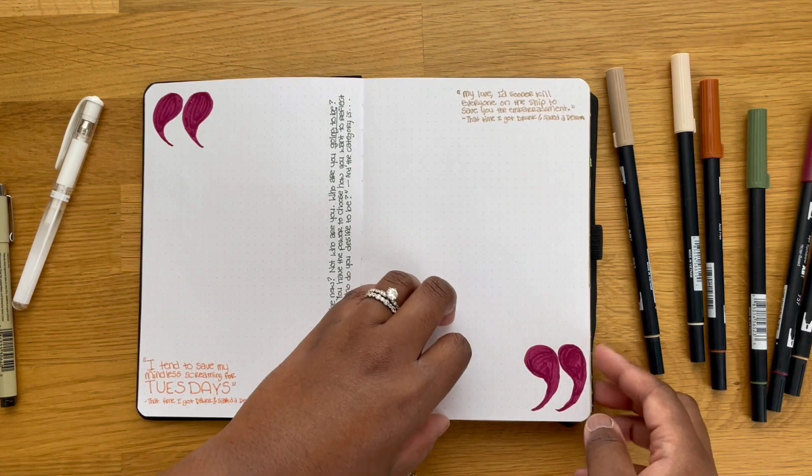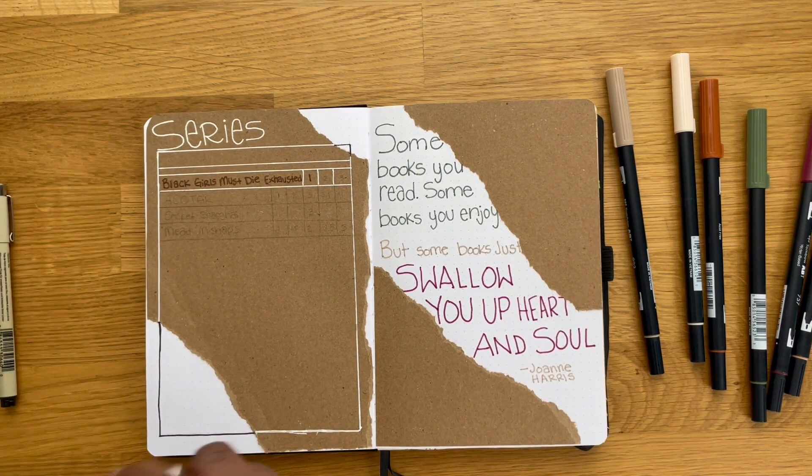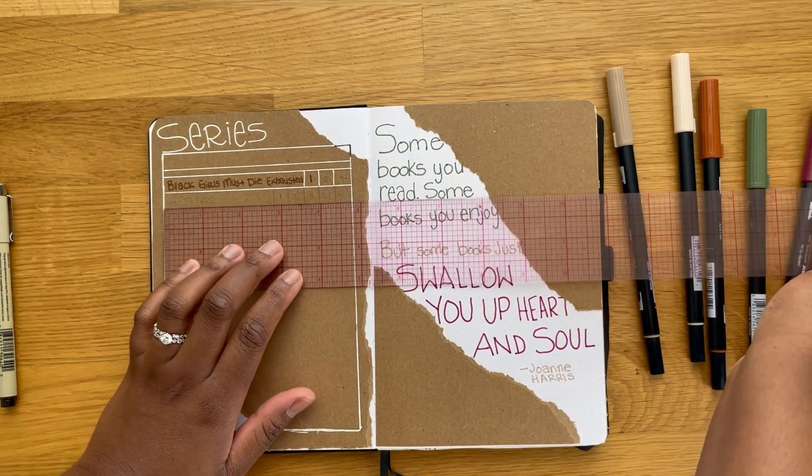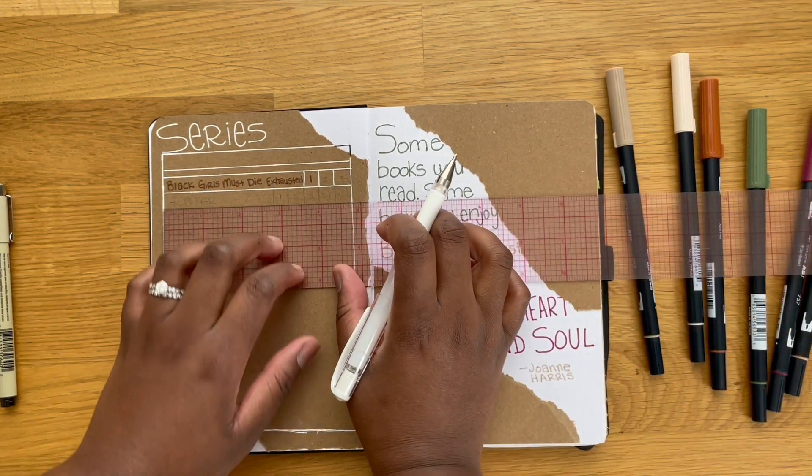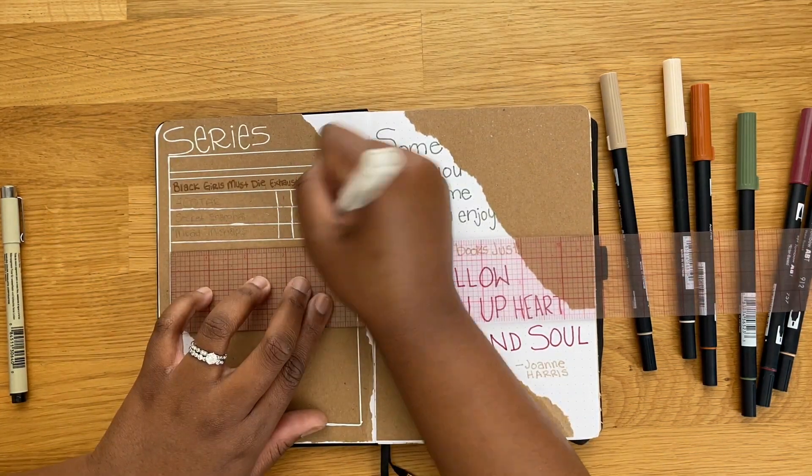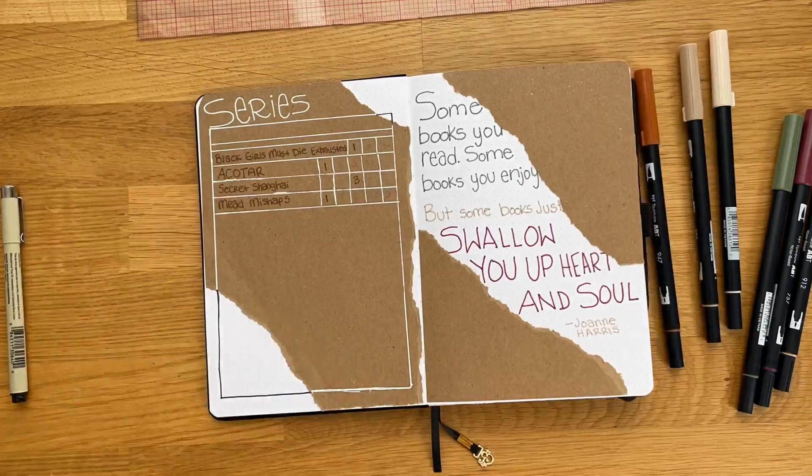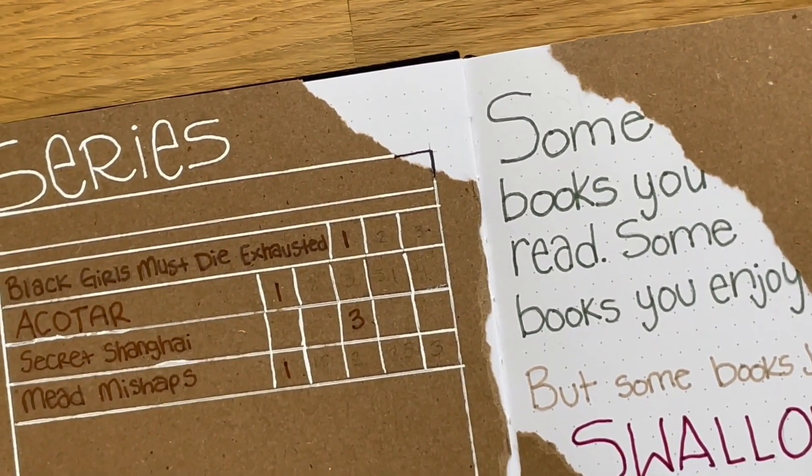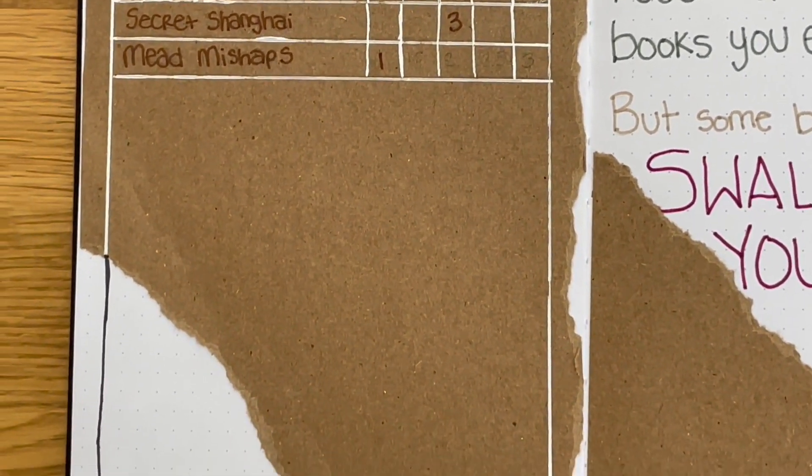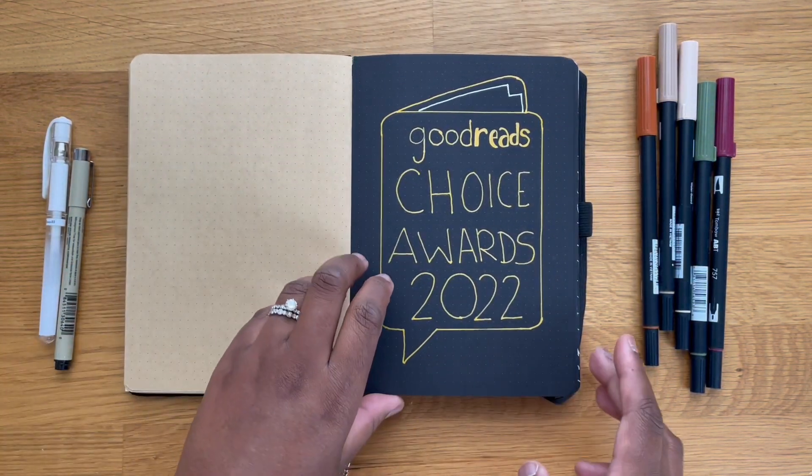I started three series last month that I'm adding to my tracker here. I'm adding A Court of Thorns and Roses, and if I'm being honest, I don't even really know if I want to continue with this series. I'm also adding Secret Shanghai - Foul Lady Fortune is book three in this series, which I didn't know about. And then the last series I'm adding here is Mead Mishaps, which That Time I Got Drunk and Saved a Demon is a part of. Oh shoot, I'm just now realizing I did read the second book in Black Girls Must Be Exhausted, so I do need to update that right now.